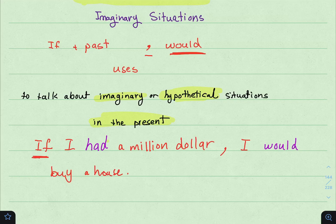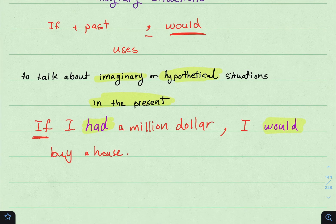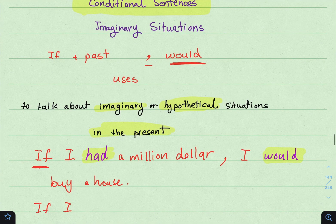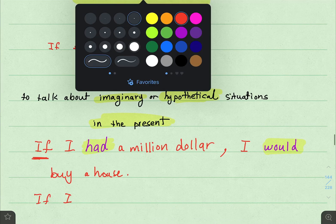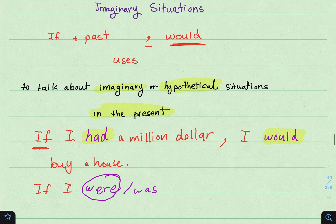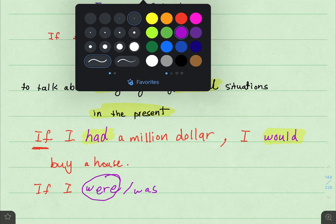مثل ما وضحت لكم: if + simple past، والمين كلوز يكون would. Another example: if I were — هنا بالنسبة لـ if I أو if she أو if he مع conditional sentences with imaginary situations، دائماً أستخدم were. ما أقول was، لأن هنا موقف افتراضي أو خيالي. يعني if I were you — أنا لست أنت، بس هنا أنا أتخيل. So: if I were you, or if I were rich.